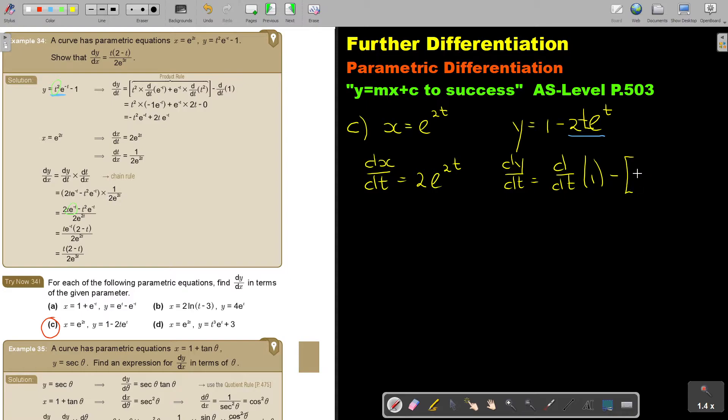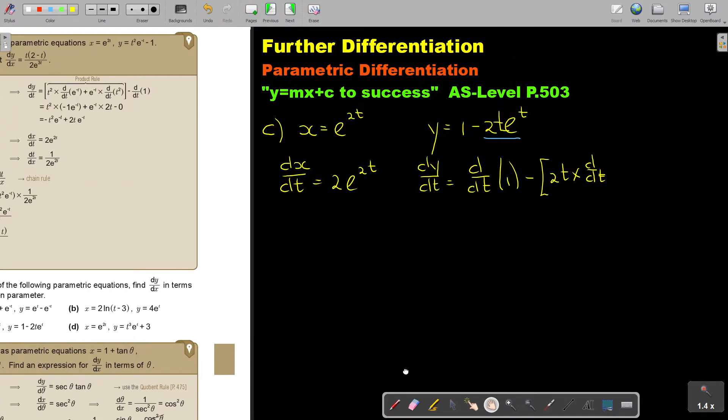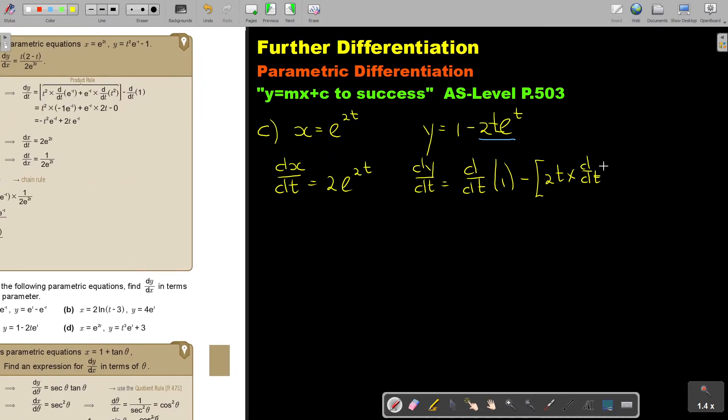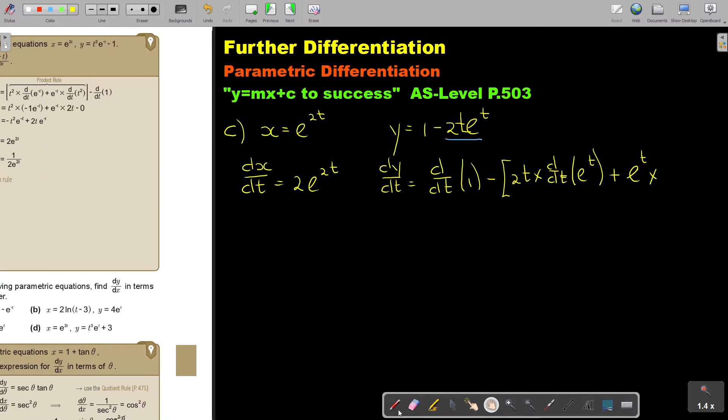So it's going to be 2t multiplied by d over dt. And then don't forget your e to the power of t. And then plus, rewrite the second one.